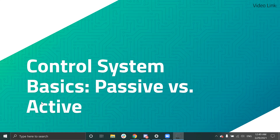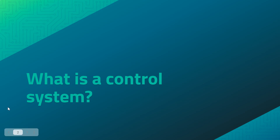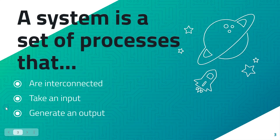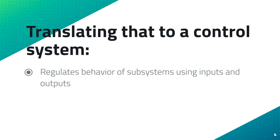Hi, I'm Sandra, I'm Katherine, and today we'll be talking about the basics of a control system. To start off, what is a control system? A system is a set of processes that are interconnected, take an input, and generate an output. Translating that over to a control system: a control system is a system that's able to regulate the behavior of other subsystems in a robot and basically controls the robot.